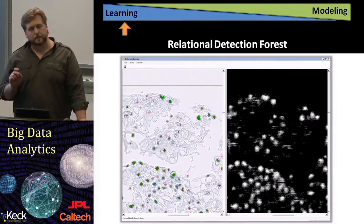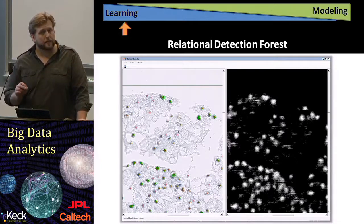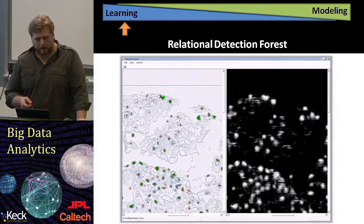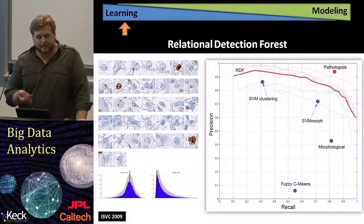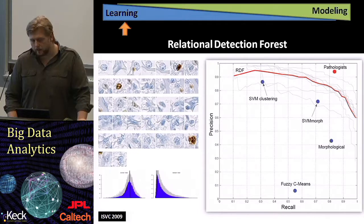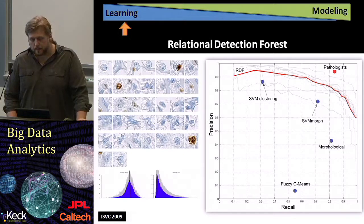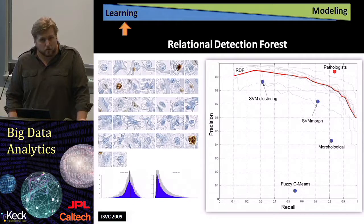We classify every single pixel in the image. What you can see on the right is the confidence of the classifier for whether a single pixel is a cell nucleus or not. You can already see some structure on the right side, while the left side is very blurred and washed out. After detecting these nuclei, we compare our algorithms using a precision-recall curve as discussed in the previous module. The red curve is the result of the random forest presented here. The top right shows the performance of two pathologists — they also disagree with each other, and it shows that the algorithm is worse than the experts but comes close compared to competing methods.